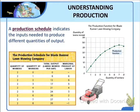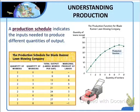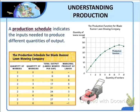Now let's turn our attention to a firm's production schedule, which indicates the inputs needed to produce different quantities of output. Let's look at a production schedule for a fictional lawn mowing company called Blade Runner Lawn Mowing. The table shows a production schedule for a typical week. Blade Runner uses two inputs: mowers and workers. Notice that the number of mowers is fixed at two — no matter how many lawns are mowed, only two mowers are used. That is the fixed input.